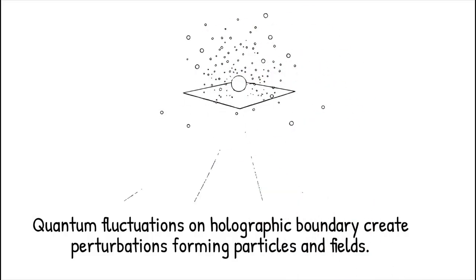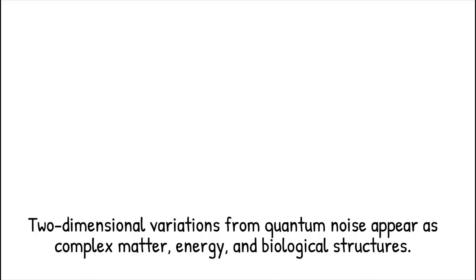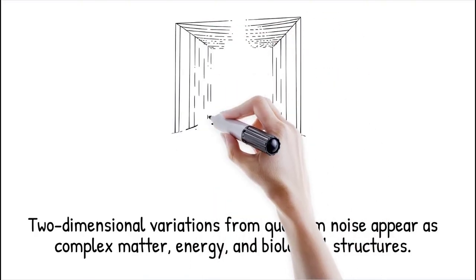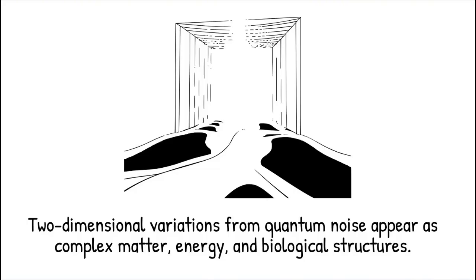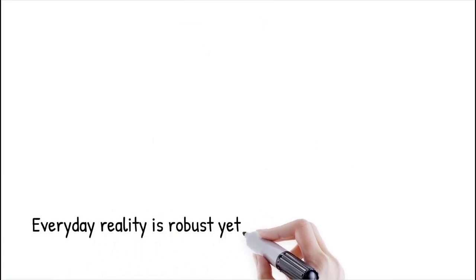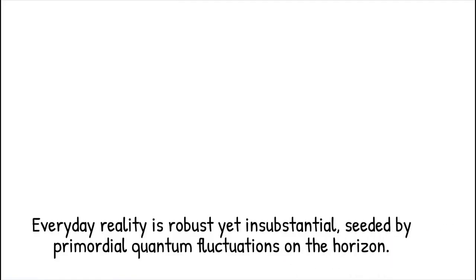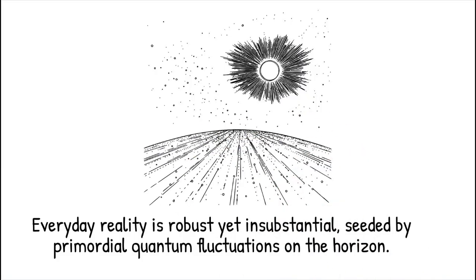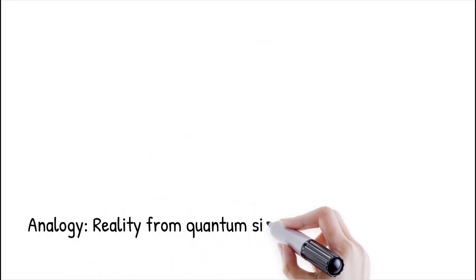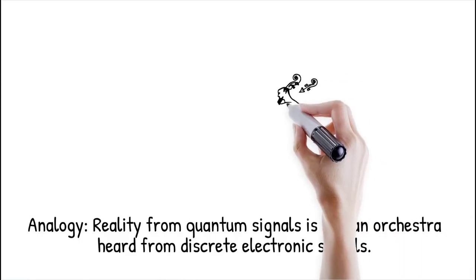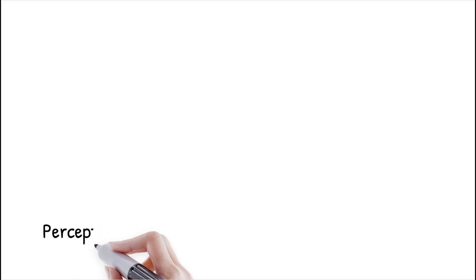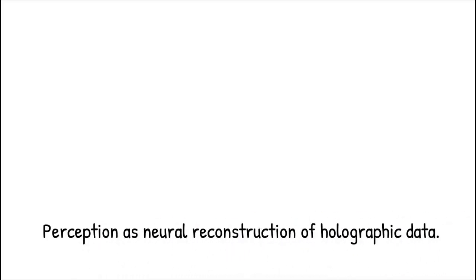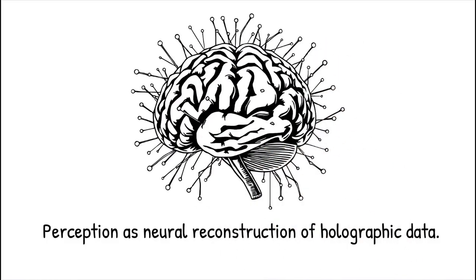Quantum fluctuations on the holographic boundary generate tiny perturbations that propagate into the bulk as apparent particles and fields. These small two-dimensional variations manifest as the complex behaviors we attribute to matter, energy, and even biological processes. Thus, the solidity and continuity of objects, including living cells, emerge from underlying quantum noise on the cosmic edge. This paradoxically makes our everyday reality both robust and fundamentally insubstantial. Primordial quantum fluctuations on the horizon are believed to seed the large-scale structure seen in the cosmic microwave background.